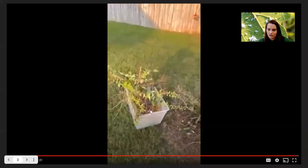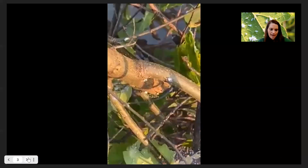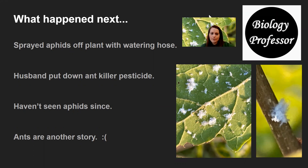So again, there's the mostly dead plant — I'd already cut down most of it and was just trying to clear up some more room. What did I do? I used a watering hose and just soaked the plant, spraying off all of the aphids with a strong stream of water. I had my husband put down ant killer pesticide, and I haven't seen any more aphids since. The ants are another story — we keep finding ant infestations at various points around our front and backyard and just treat them when we find them, but haven't seen any more aphids since then.